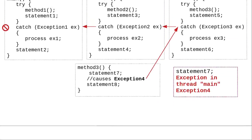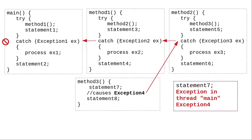Finally, we have the situation where method 3 does statement 7 and then causes an exception that nobody handles. Everyone terminates, throwing the exception to their caller, eventually going all the way up to main, which can't handle the exception, and the program crashes.